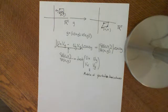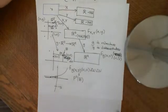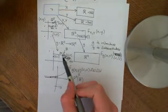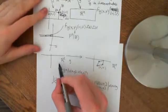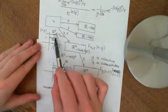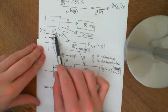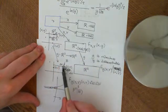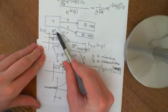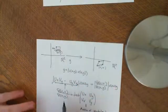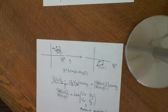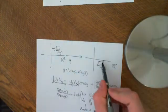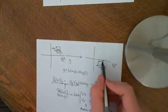So that gives us everything we wanted to know. Going back to our original problem: we wanted to do the opposite thing — take a little box in the codomain, pull it back into the domain, and work out what area the corresponding parallelogram in the domain has.